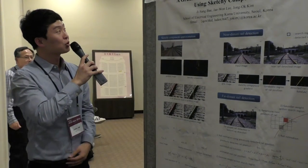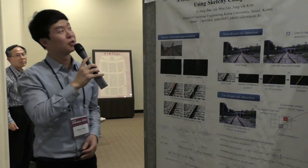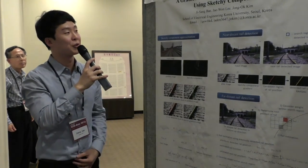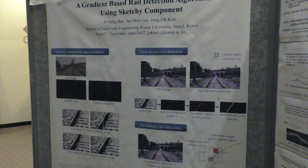Hello. We propose a rail detection algorithm using sketch component. Our algorithm is especially useful to detect rails on the gravel region in the track bed. Conventional rail detection algorithms generally find rails using gradient component, and we propose to use sketch component to detect rails.